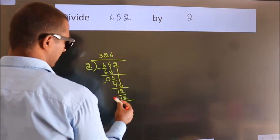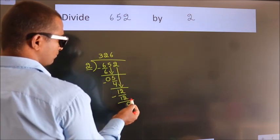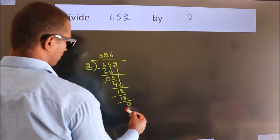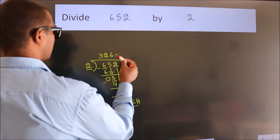Now we subtract. We get 0. No more numbers to bring down, so we stop here. This is our remainder. This is our quotient.